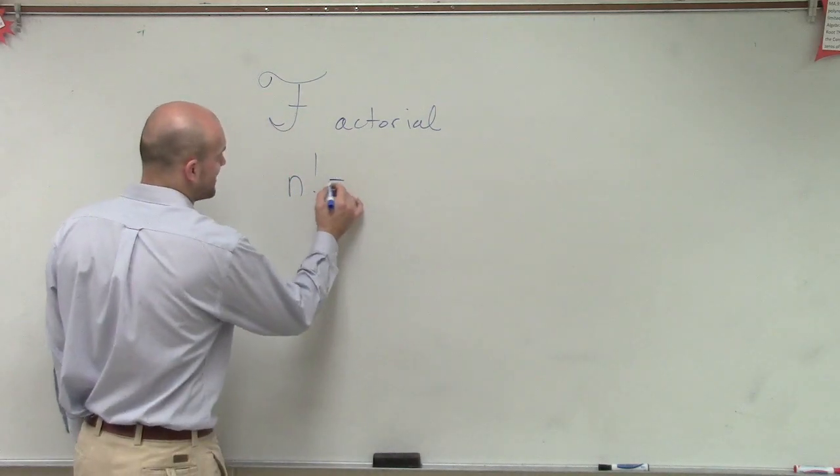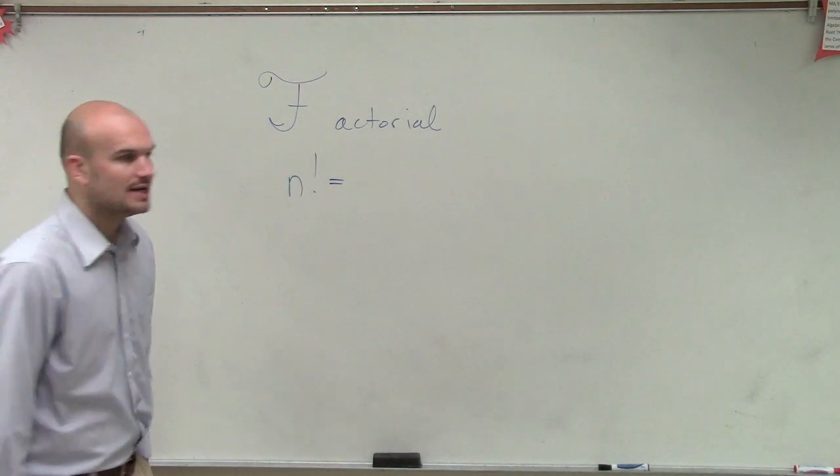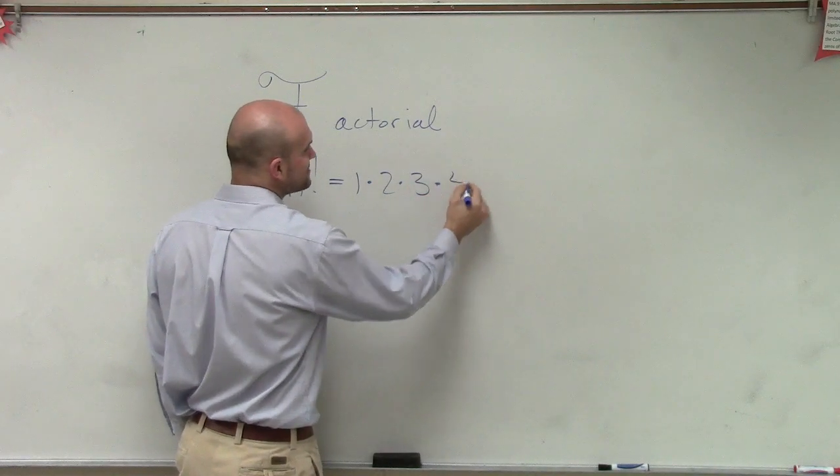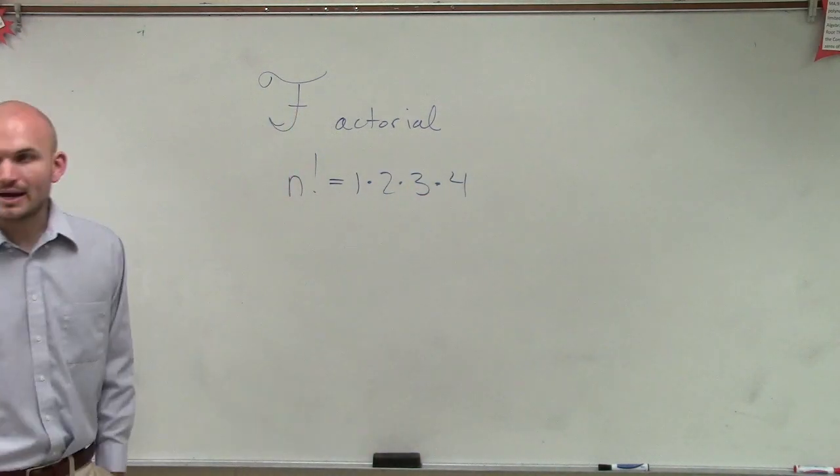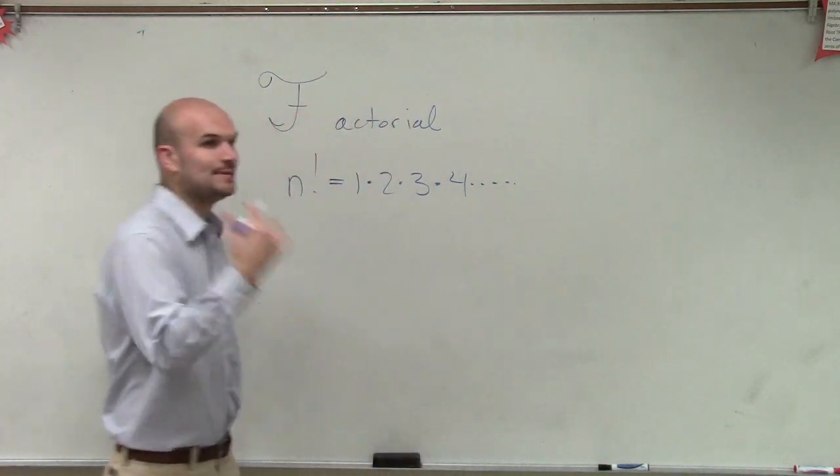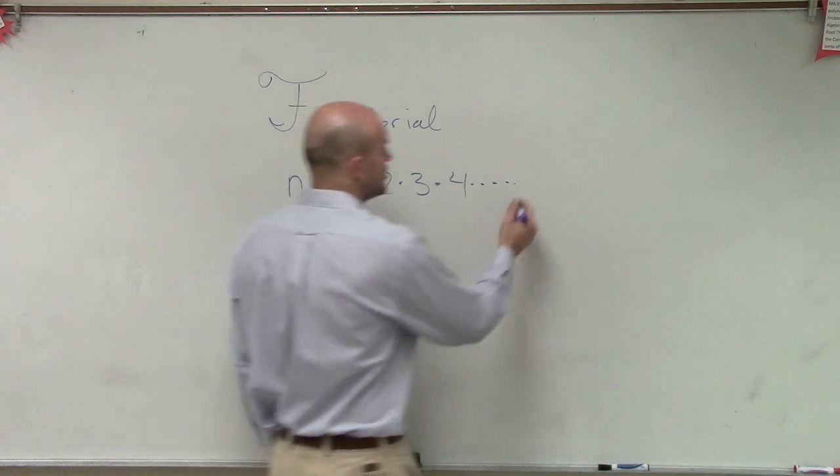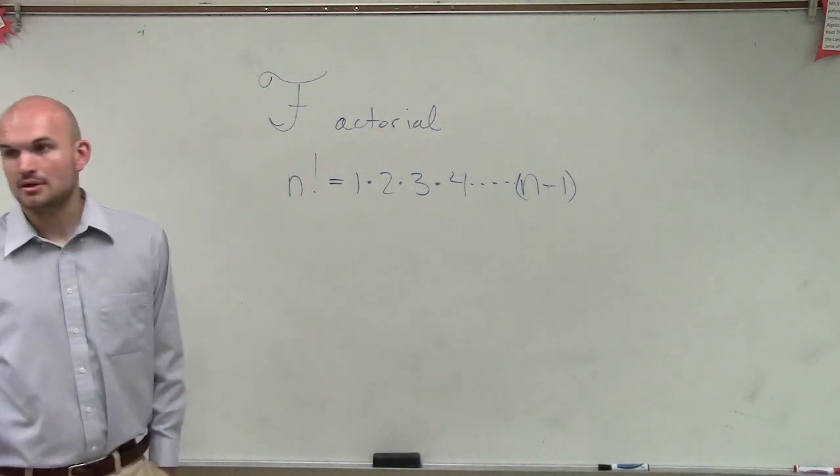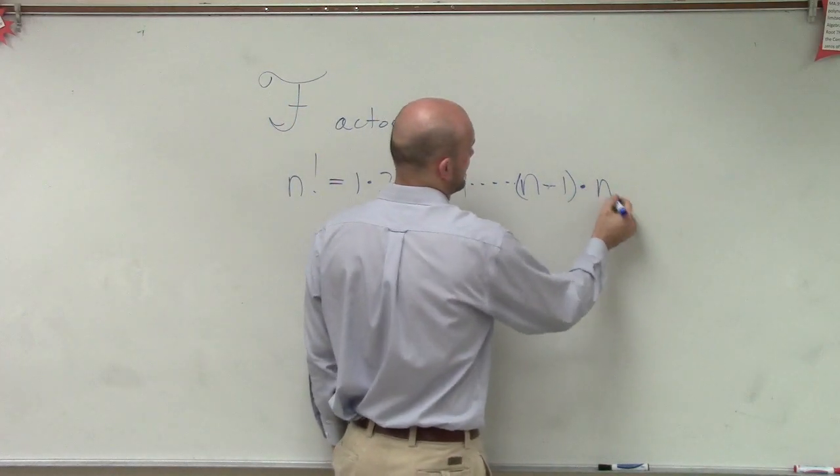The definition of a factorial is 1 times 2 times 3 times 4, all the way up. It doesn't matter how big n is going to be, you're going to keep on going to the numbers, to the previous number of n, and then times n.